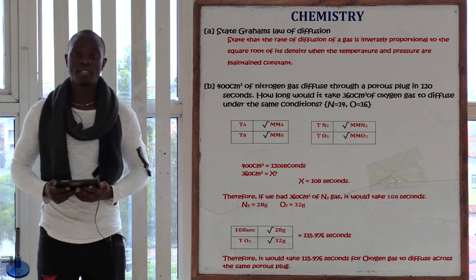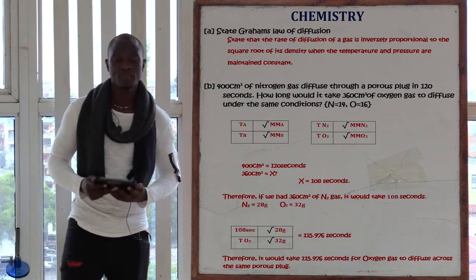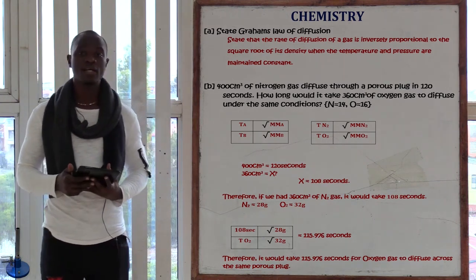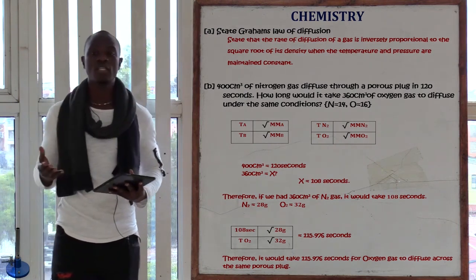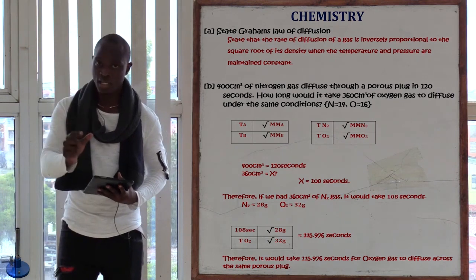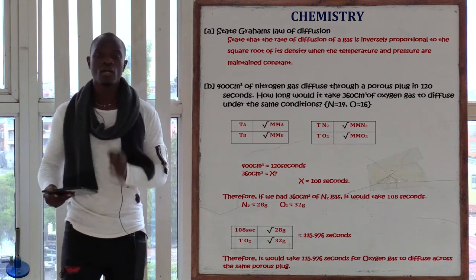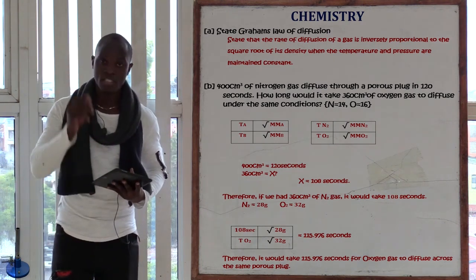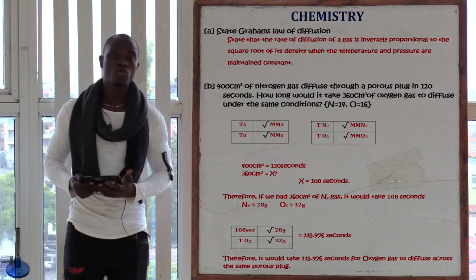First, we must note the molecular masses. For nitrogen gas (N₂), one nitrogen atom is 14 grams and the other is 14 grams, so the total mass of nitrogen gas is 28 grams. For oxygen gas (O₂), one oxygen atom is 16 grams and the other is 16 grams, so the mass of oxygen gas is 32 grams. Since we are asked about time, we will use the time formula.